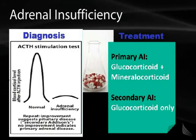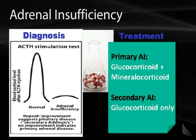Diagnosis can be made by clinical symptoms and biochemical testing, but also by an ACTH stimulation test, also called the cosyntropin stimulation test. ACTH is injected, and the normal response is a rise in cortisol. In adrenal insufficiency, ACTH injection does not increase cortisol, as shown in the graphical representation, giving a more conclusive diagnosis. For treatment of Addison's disease, both glucocorticoid and mineralocorticoid replacement are needed — typically prednisone and fludrocortisone. In secondary adrenal insufficiency, only glucocorticoid replacement is needed since the aldosterone system is intact.